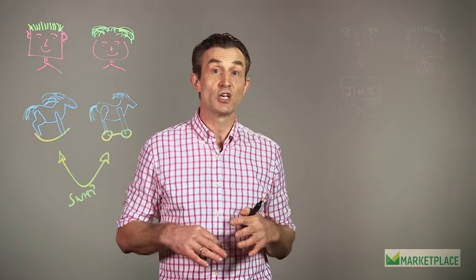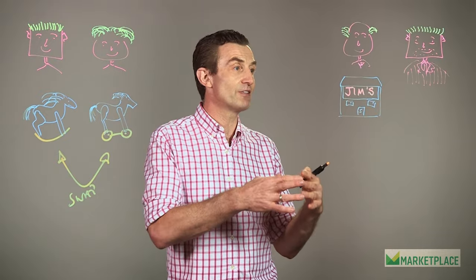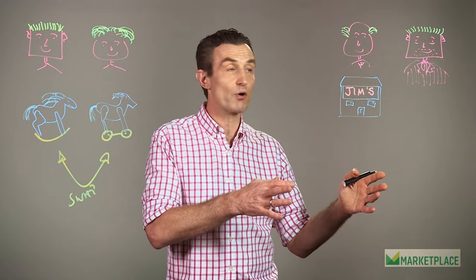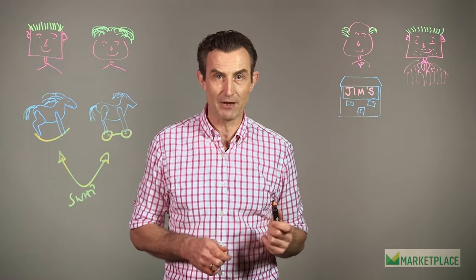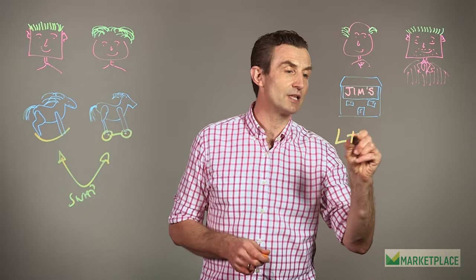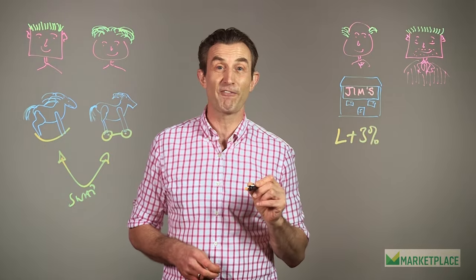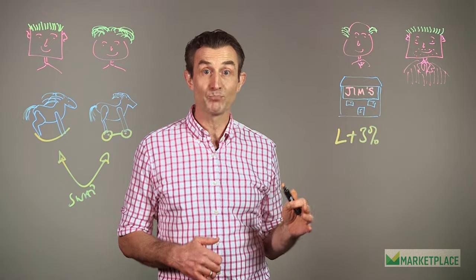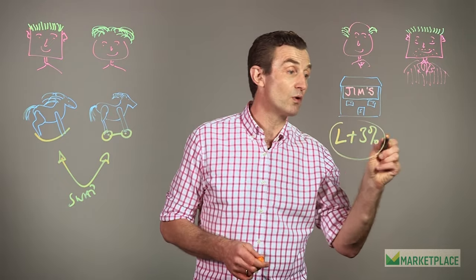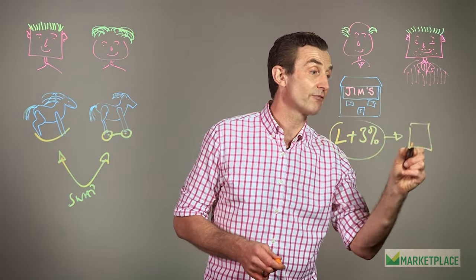So how does that work in the business world? Well, let's skip forward 20 years. We find that Jim now owns the local store, and Bruce has become an investment banker. Now, Jim takes out a loan at LIBOR plus 3%, which is fine, except for the fact that LIBOR is a floating rate. It goes up and down, which means that you never really know how much interest you're going to be paying every month.